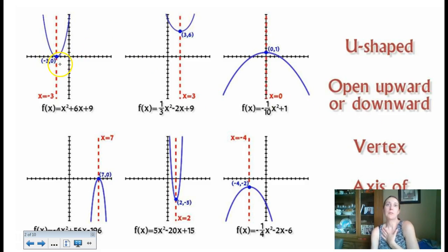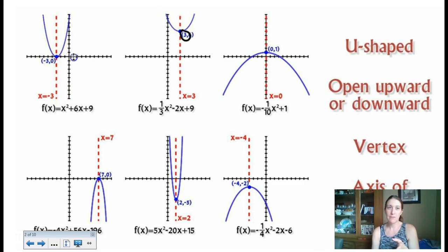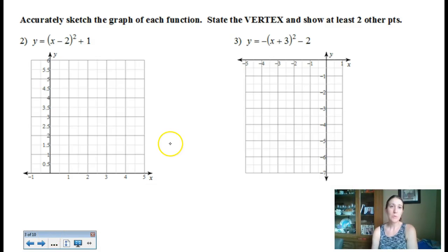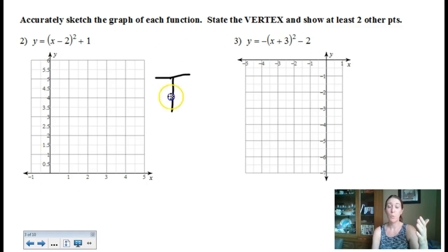We need to familiarize ourselves with the concept of the axis of symmetry. The vertex is the center point of the parabola — the symmetry point — which tells you that the line of symmetry is a vertical line that slices straight through the parabola. Whatever the x-value of the vertex is, that is also the equation for the line of symmetry — so x equals 2, x equals 7, x equals negative 4, and so on. In your graphing, give me the location of the vertex and at least two other points.